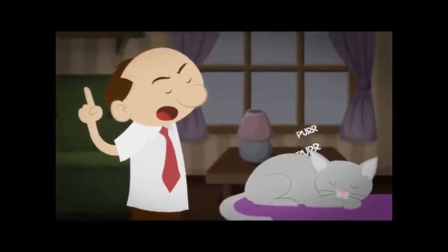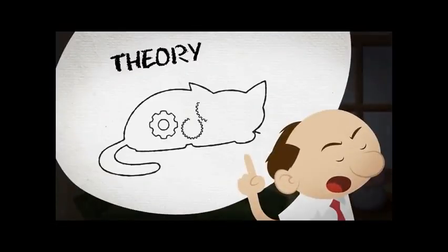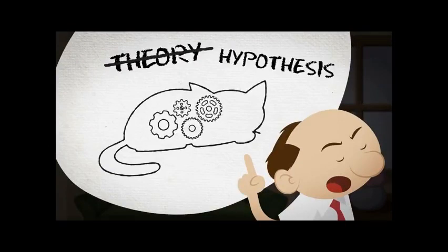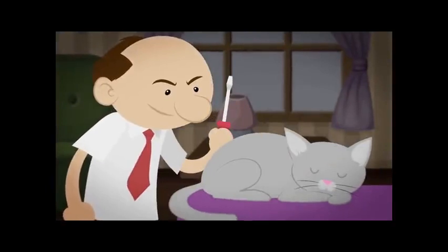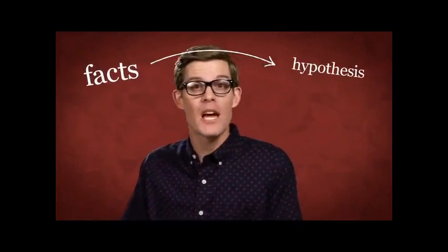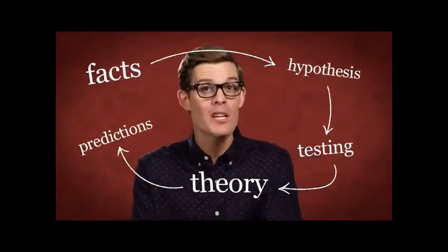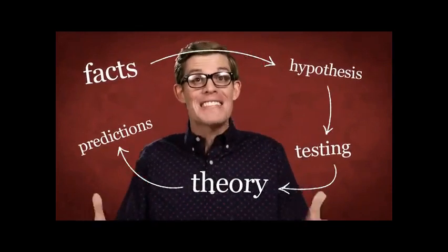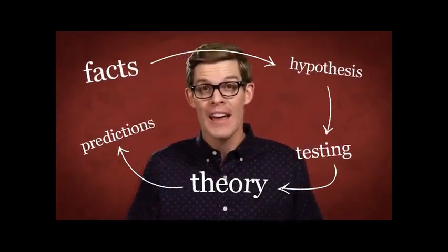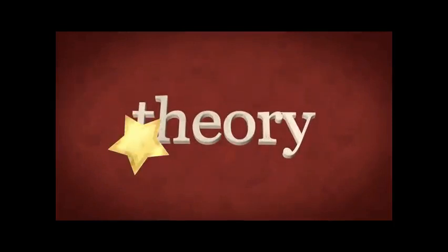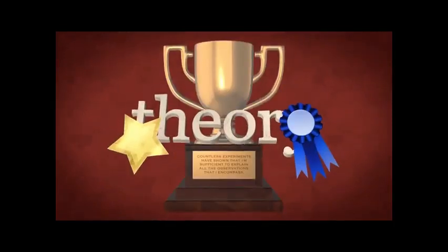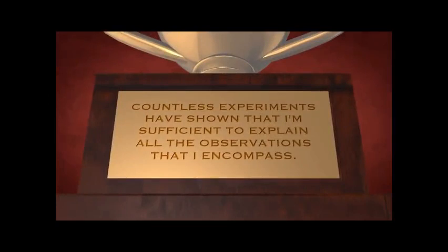You may have heard someone say, 'I have a theory about why cats purr — I think it's because they're actually tiny robots and those are their gears.' Well, that's not a theory. That's actually a hypothesis — it's something that could be tested. This cycle — taking facts and observations, thinking up possible explanations, testing those explanations, and then making predictions based upon them — that's what this whole science thing is about. Being a theory means that idea got the gold star; countless experiments have shown it is sufficient to explain all the observations it encompasses.